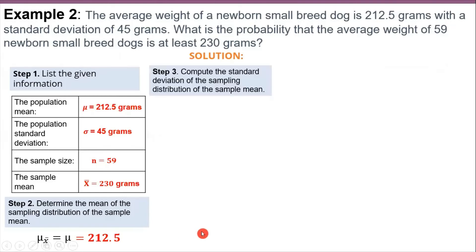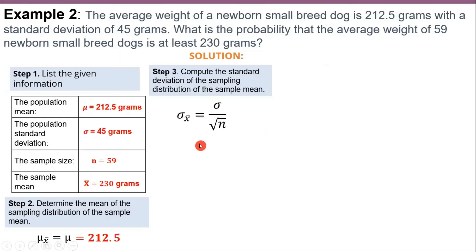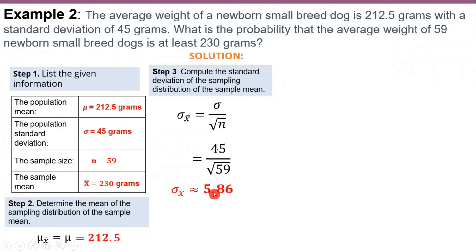Step 3 is to compute the standard deviation of the sampling distribution. We classify first: since the population size is not given, we conclude that the population is infinite. So we use the infinite population formula — that is 45 divided by the square root of 59 — giving us a standard deviation of approximately 5.86.